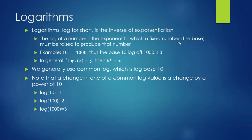In algebra you deal with logs of many different bases — log base 2, 3, 4, or natural log which is log base e. But in chemistry we use common log, which is log base 10. So we're always asking: to what power must 10 be raised to get a number? If the number we want is 1,000, then x equals 3, so the log of 1,000 is 3 because 10 cubed equals 1,000. In general, log base b of x equals y implies b to the y equals x.